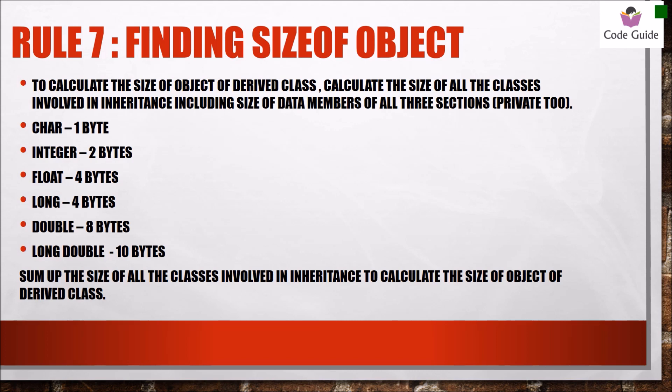Rule number seven: finding the size of an object. Although the size of data types depends on the compiler and processor, for CBSE follow the standard data type sizes. Find out the size of the class including private members — most students don't count private members, but you must count all data members. Then sum up the sizes of all classes involved in the inheritance.